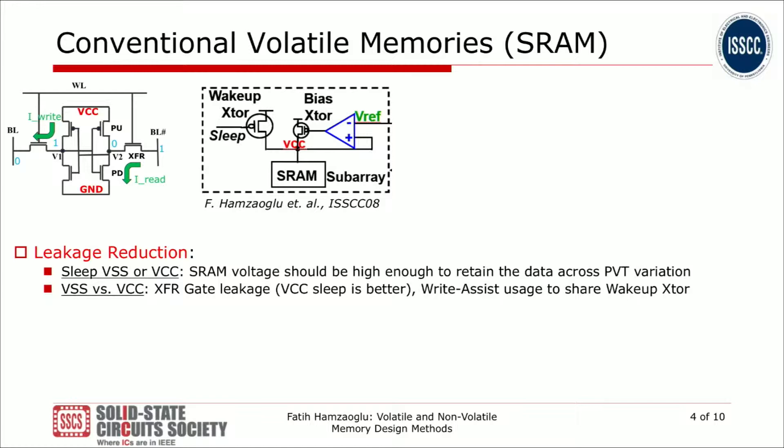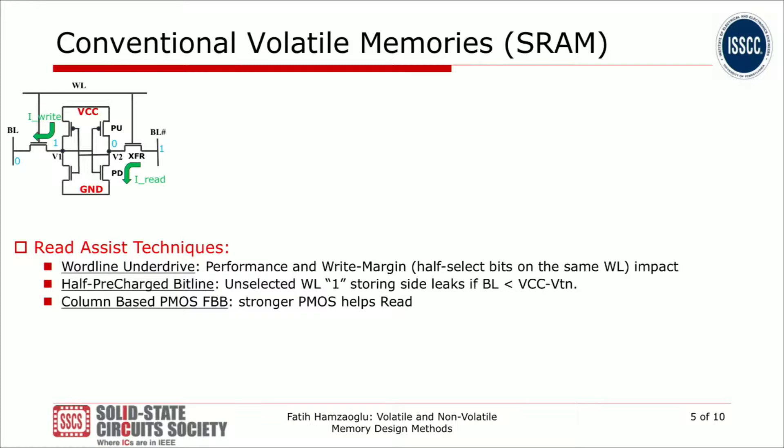Other than leakage reduction, SRAM designers also employ read assist and write assist techniques to control VCC min. For read assist: wordline underdrive helps but has a performance hit and hurts write margin because of half-select bits on the wordline. Half pre-charge of the bitline — pre-charging below one volt makes the transfer gate effectively weaker, but you must control this voltage carefully so you don't turn on unselected bits on the same wordline.